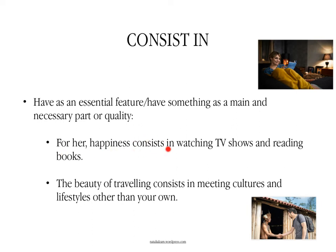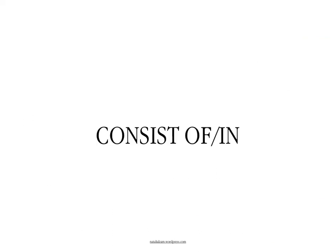So in this case, for example, 'for her, happiness consists in watching TV shows and reading books,' or 'the beauty of traveling consists in meeting cultures and lifestyles other than your own.' So these are the two prepositions that may follow the verb 'consist': something might consist of a number of parts or certain elements, or something might consist in doing something.